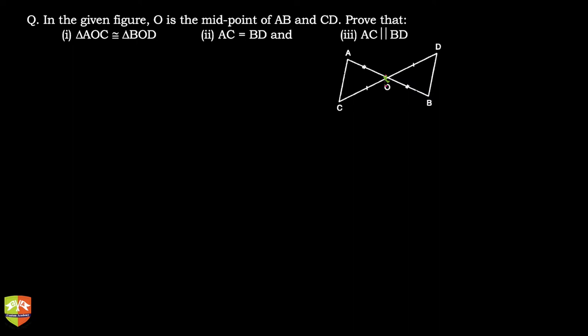Okay, so what is the question? We have to prove that triangle AOC is congruent to triangle BOD, AC is equal to BD, and third is AC is parallel to BD. So let's try and prove this.